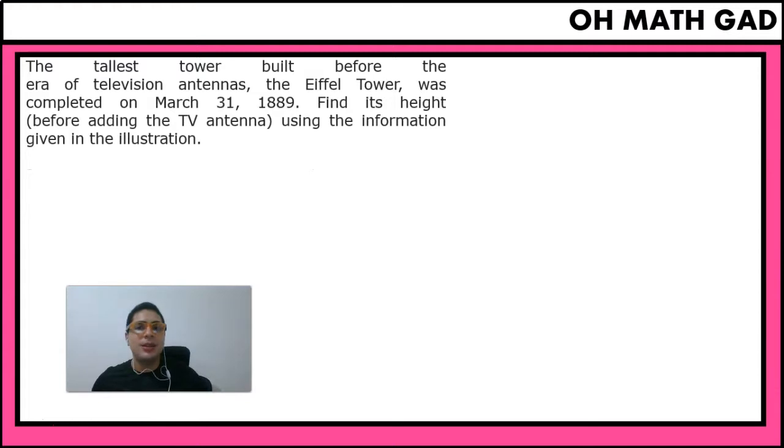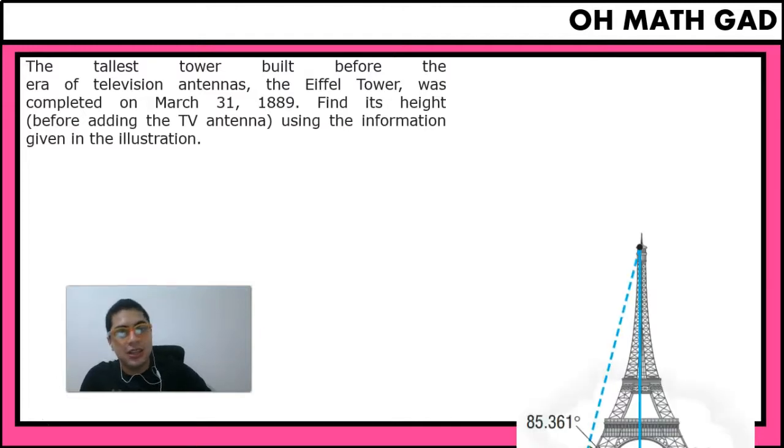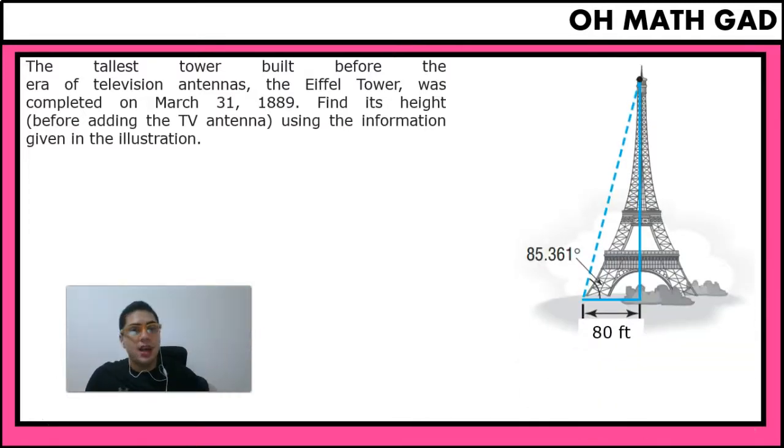Okay guys, so today's application problem says the following: The tallest tower built before the era of television antennas, the Eiffel Tower, was completed on March 31st, 1889. Find its height before adding the TV antenna using the information given in the illustration.